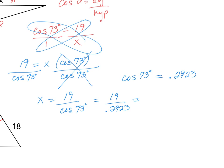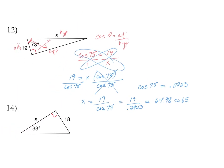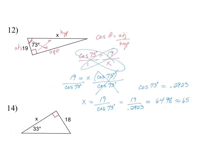And that will give me a value of 19 divided by cosine 73 gives me a value of 64.98, which we could, because it's so close, we could round that to 65. And that would be my final answer.